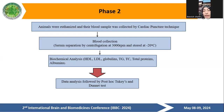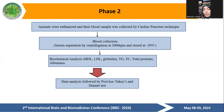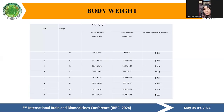Phase two: animals were anesthetized and blood samples were collected by cardiac puncture technique. Serum was separated by centrifugation at 3000 rpm and stored at minus 20 degrees Celsius. Biochemical analysis included HDL, LDL, globulins, triglycerides, total cholesterol, total protein, and albumin. Data analysis followed by post hoc test and Dunnett's test.